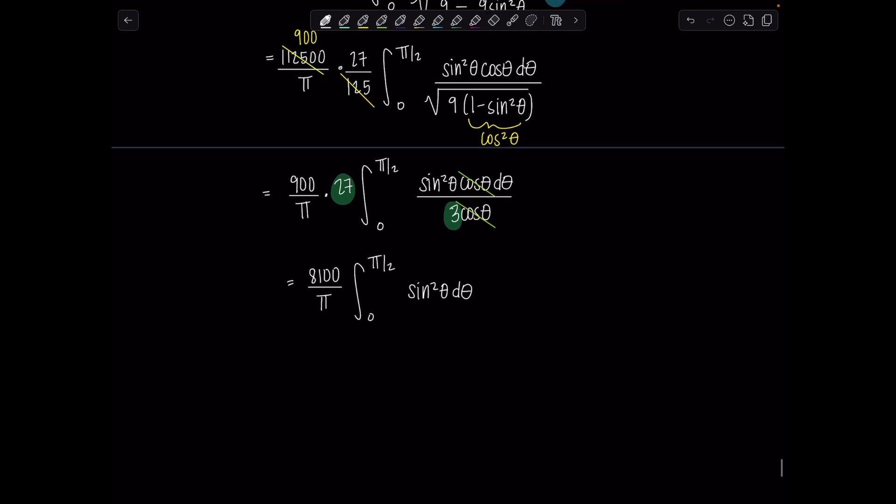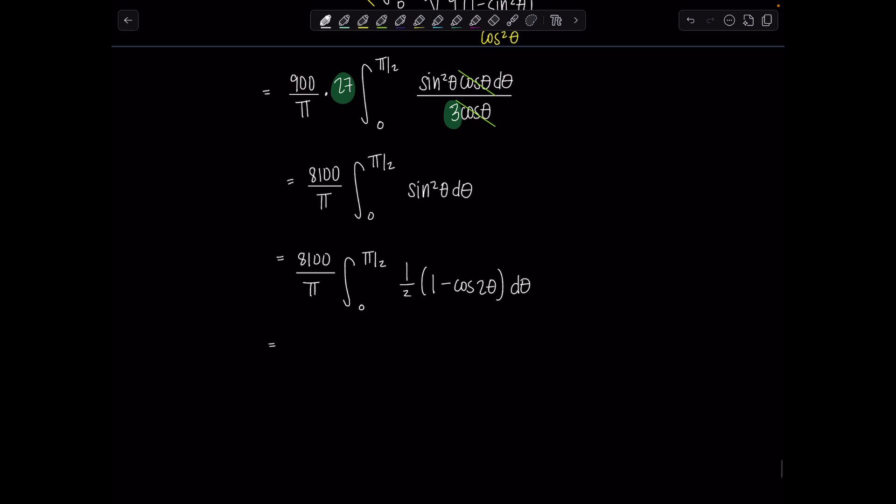Anytime you're trying to integrate sine squared, you replace it with your half angle identity. So we've got 8,100 over pi times integral 0 to pi over 2, sine squared theta is 1 half times 1 minus cosine 2 theta, d theta. 8,100 times a half becomes 4,050 over pi. Then we can take our antiderivative. Antiderivative of 1 is theta, and minus antiderivative of cosine 2 theta is 1 half sine 2 theta. This gets evaluated from 0 to pi over 2.